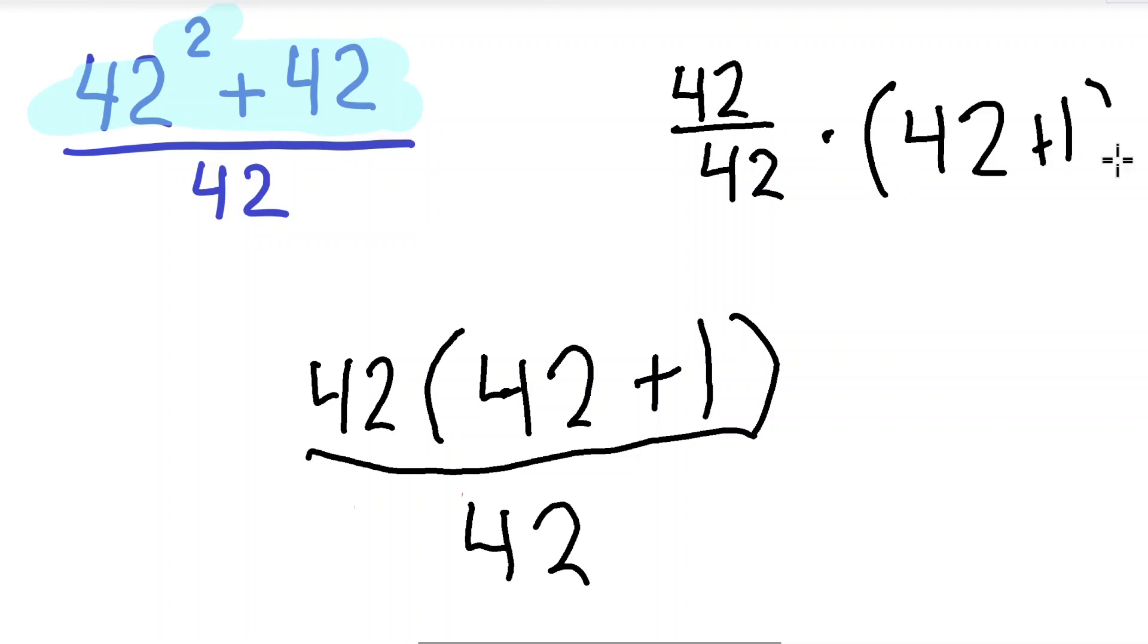And as you know, any number divided by itself is 1. So that's 1 times 42 plus 1. Times 1 doesn't change anything—it's the same number.